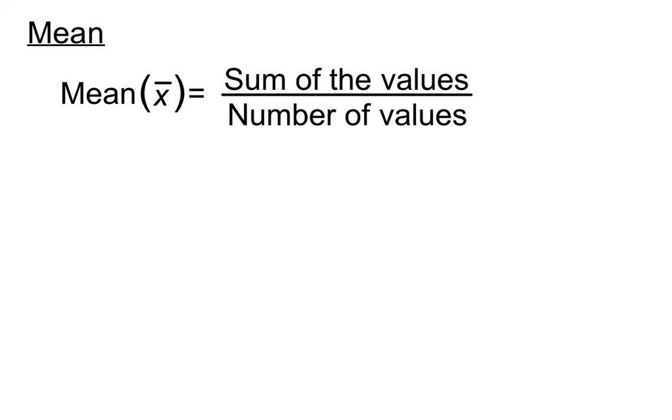This is the general idea of mean or average. We find the mean of a set of scores by putting the sum of the values on top of a fraction and we divide that by the number of values.